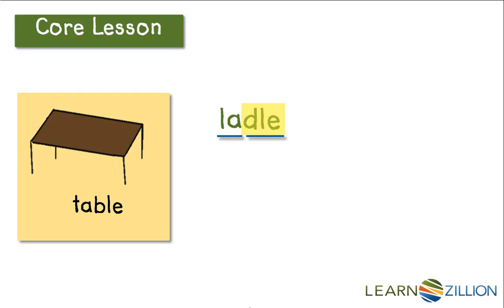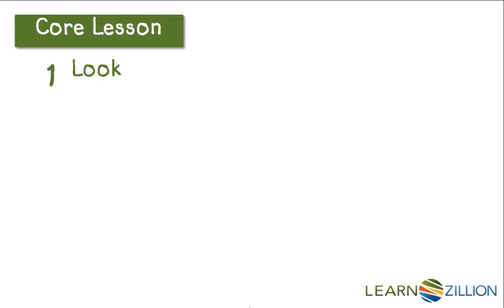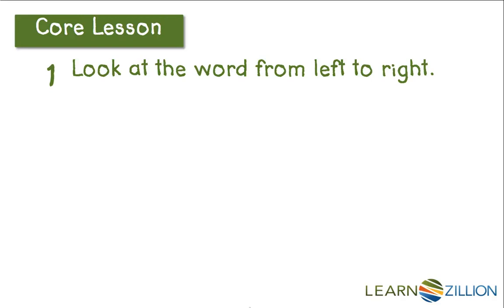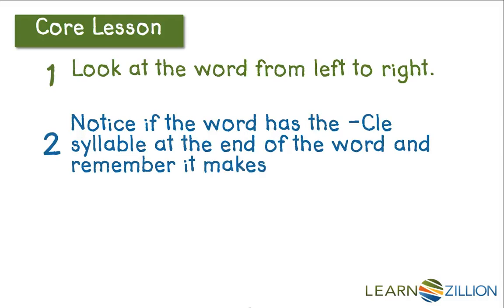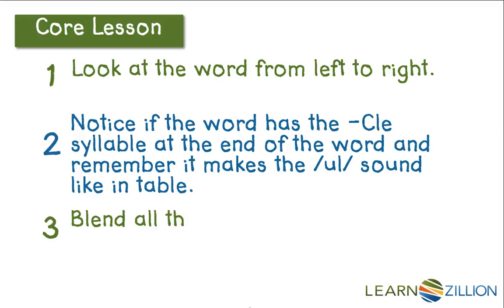If I blend those sounds together, I get D-L. Now I can blend the first syllable with the second to read the word: lay-dl — LADLE. Here are the steps I just did to read LADLE. First, I looked at the word from left to right. I noticed that it had two vowels, so it must be two syllables. When I did that, I also noticed that it had a consonant LE at the end, and I remembered that LE makes the UL sound like in the word table. Then I blended the sounds in each syllable, and then blended the two syllables together to read the word.